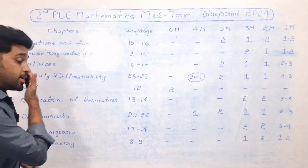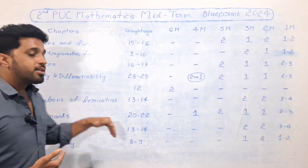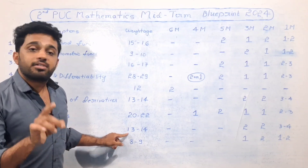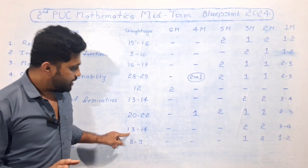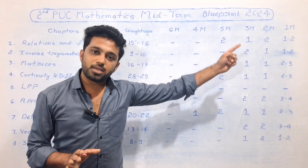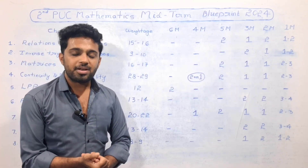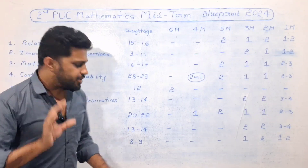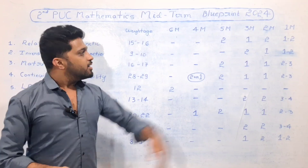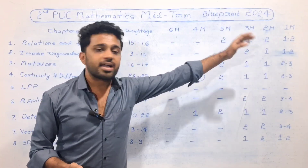Vector Algebra carries 13 to 14 marks in the mid-term exam, with 3-mark, 2-mark, and 1-mark questions. The 3D Geometry chapter carries 8 to 9 marks, also with 3-mark, 2-mark, and 1-mark questions.